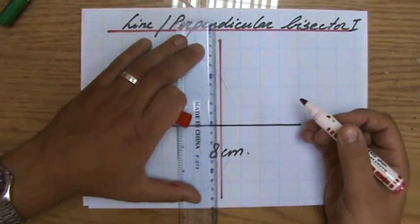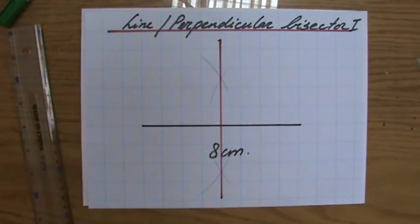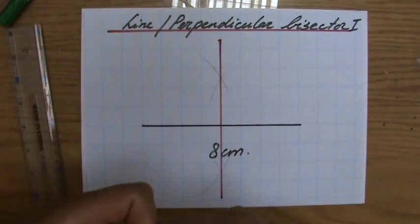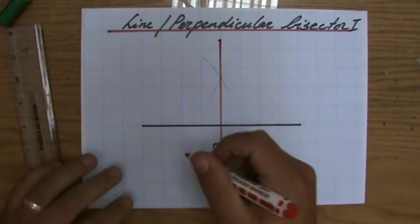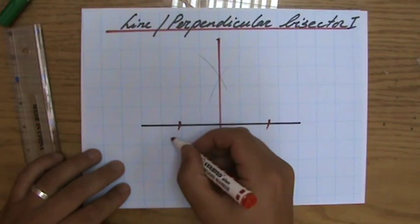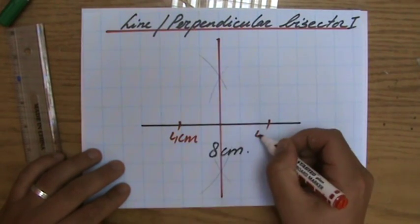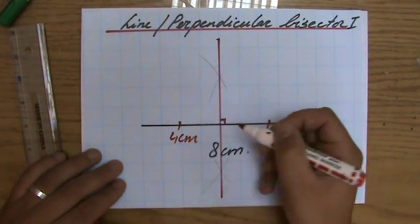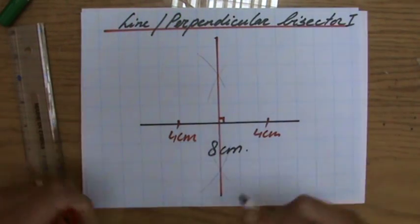If I connect those two points of intersection now, that is my perpendicular bisector, my line bisector, dividing my 8-centimeter line into two equal parts of 4 centimeters each, with a perpendicular angle at 90 degrees.